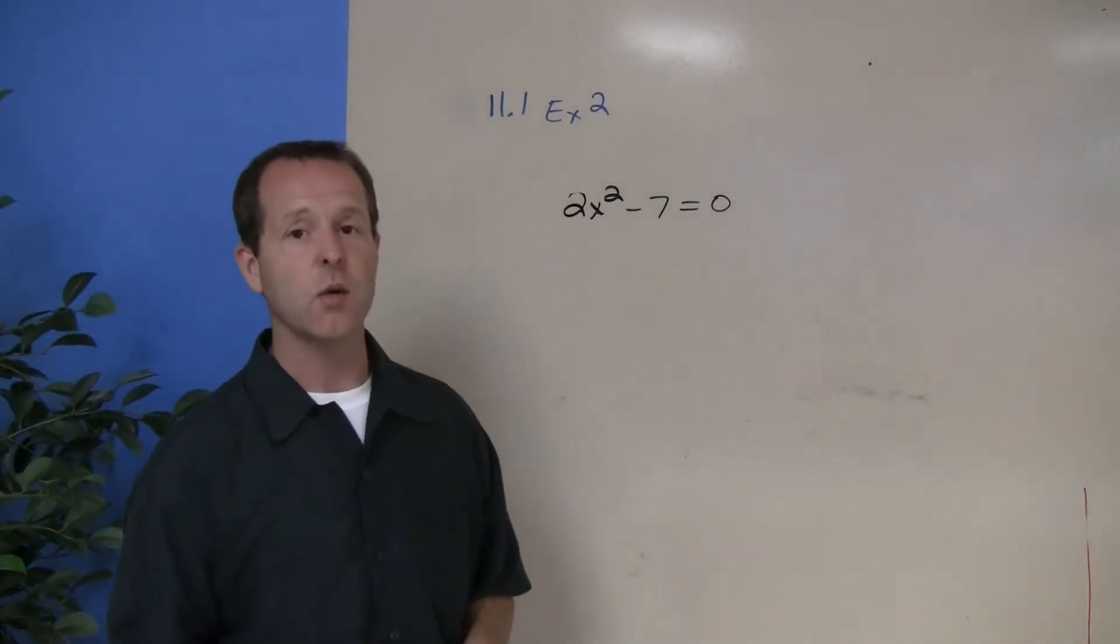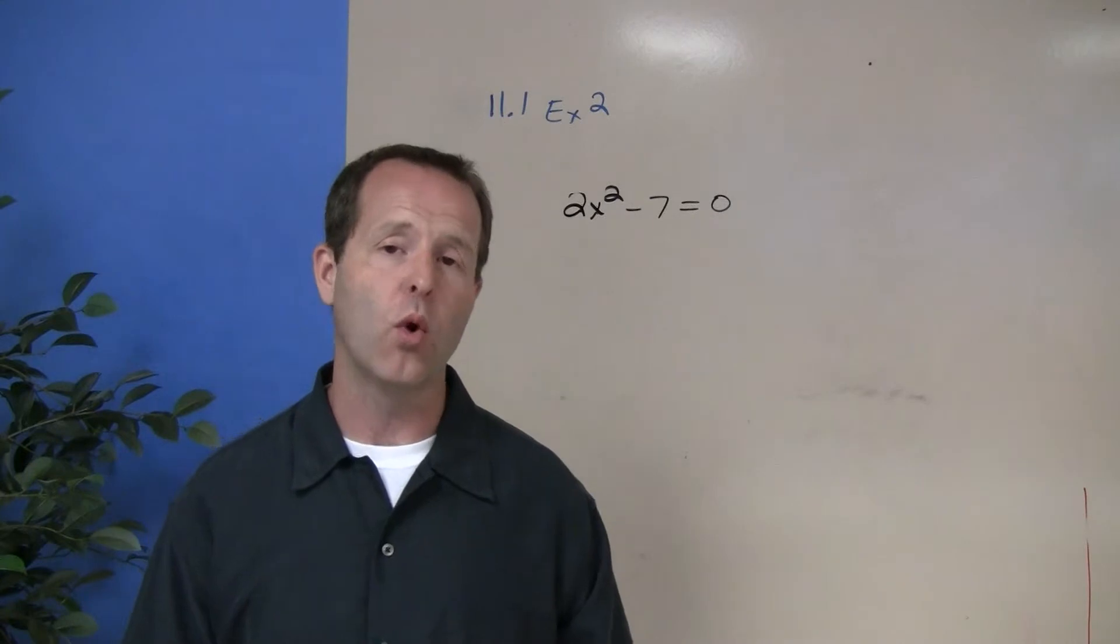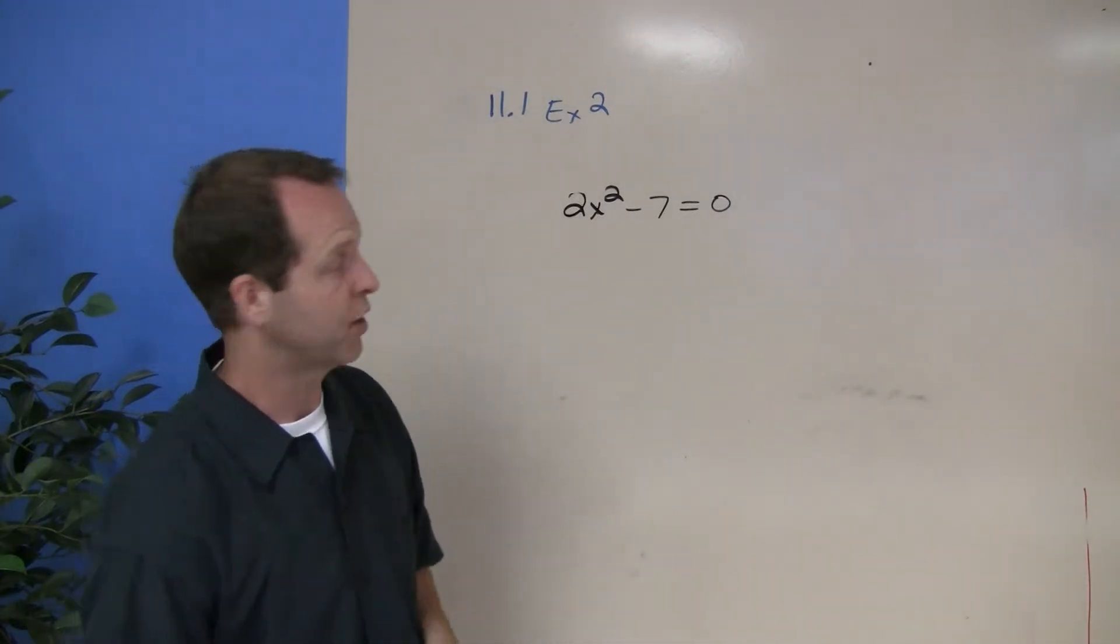We have 2x squared minus 7 equals 0, and we want to find out what are the values of x that make this equation true.